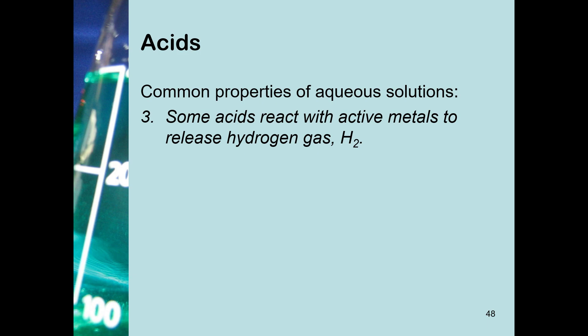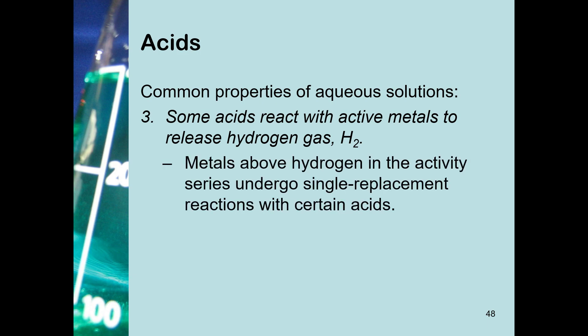Some acids will react with metals — we call these the active metals, the ones that are above hydrogen in the activity series. Through a single replacement reaction, they will bump the hydrogen out of the acid, leaving what we call a salt. The hydrogen gas will bubble to the surface. If you dropped an active metal into an acid, hydrogen gas would be bubbling to the surface.